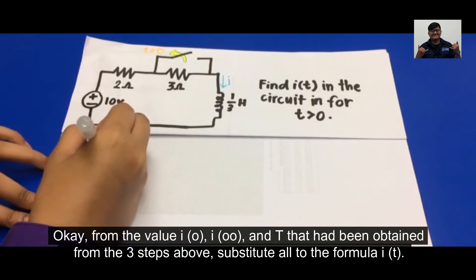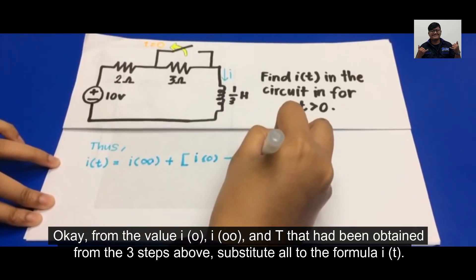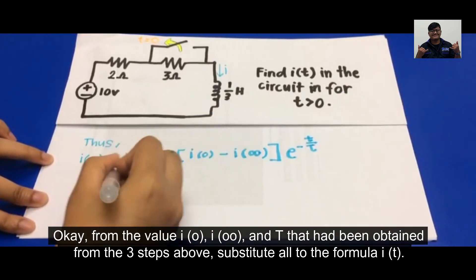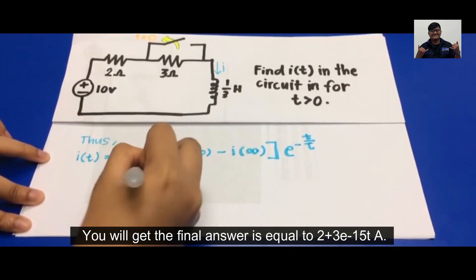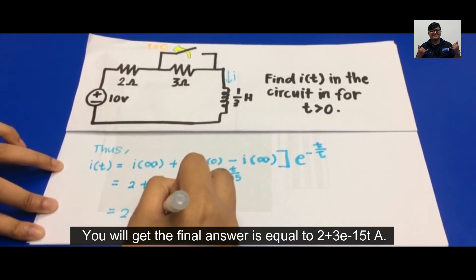From the values i-naught, i-infinity, and Tau that had been obtained from the three steps above, substitute all to the formula i(t), and you will get the final answer is equal to 2 plus 3 times e to the negative 15t amperes.